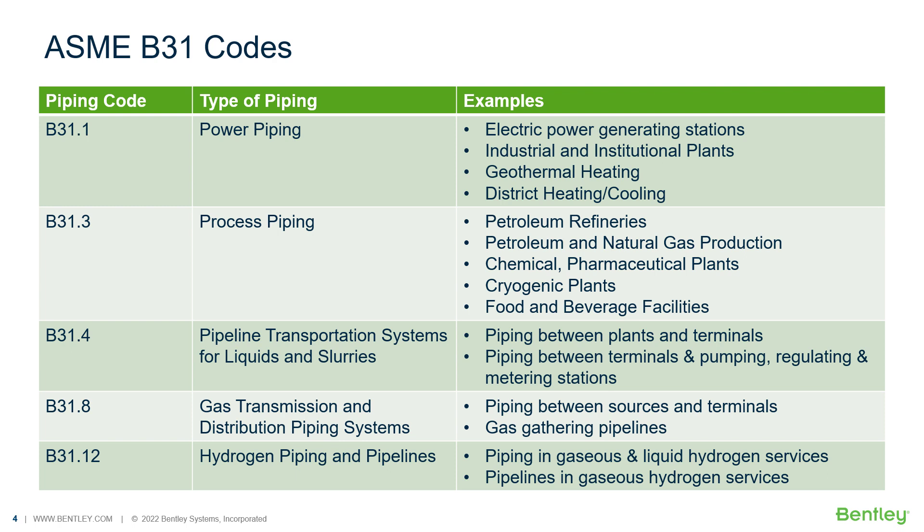B31-12, which was recently added to AutoPipe, is for hydrogen piping and pipelines.